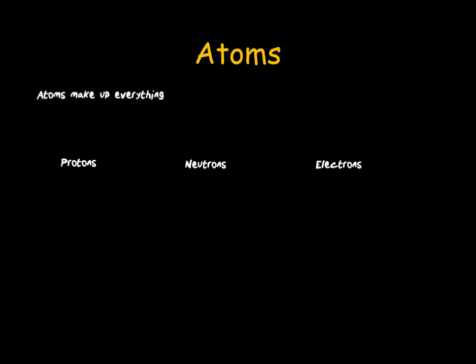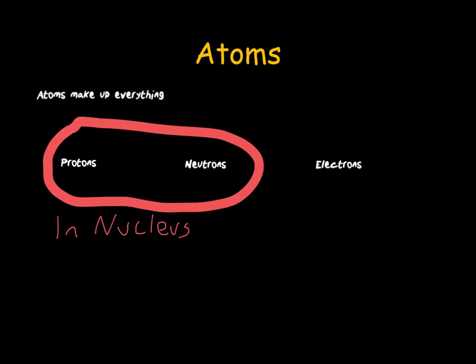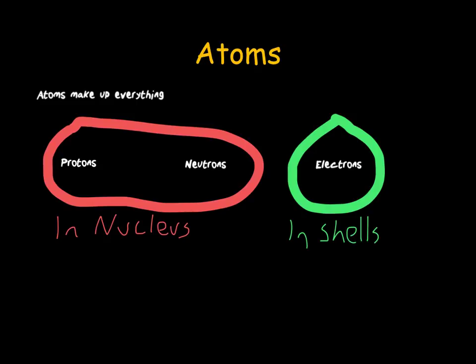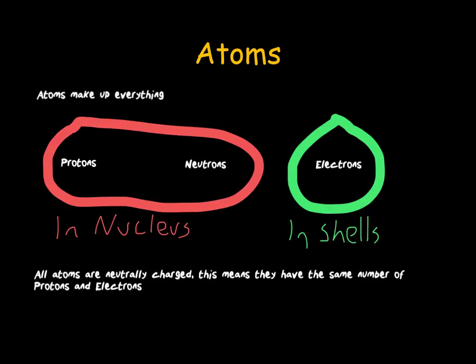We will look at protons, neutrons and electrons in a bit more detail on the following slide. However, for now, protons and neutrons are found inside the nucleus of the atom. That's where most of the mass of the atom is found. Electrons, on the other hand, go around the outside in shells. Protons are positive, neutrons are neutral and electrons are negative. All atoms are neutrally charged. This means that in an atom you have the same number of protons as you do electrons. This gives us a neutral charge overall.